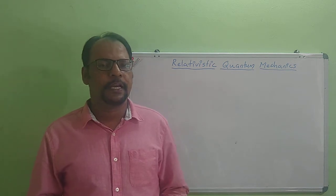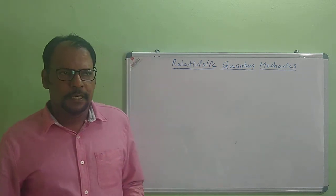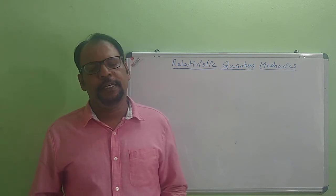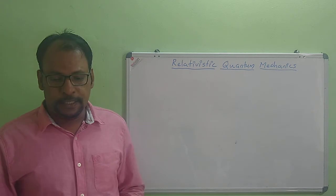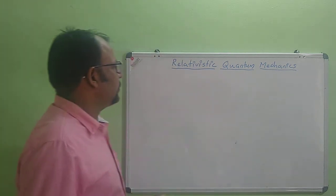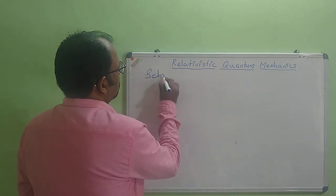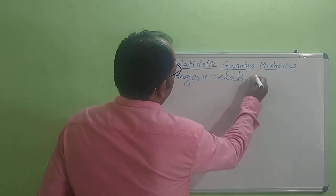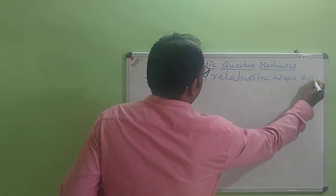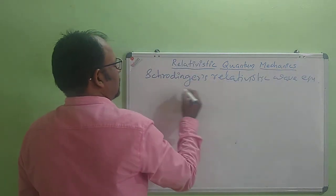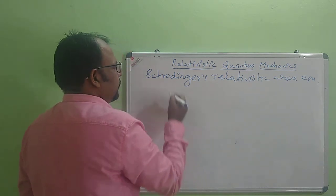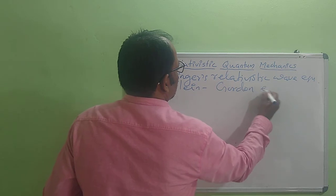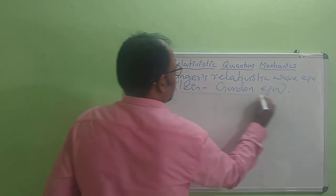For spin-half systems, we can use the Dirac relativistic wave equation. The advantage of the Dirac wave equation is that spin emerges as a consequence of the Dirac relativistic wave equation. First, we will study Schrödinger's relativistic wave equation. That relativistic form was studied by Klein and Gordon, and it is called the Klein-Gordon equation.